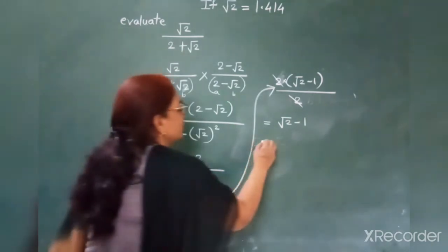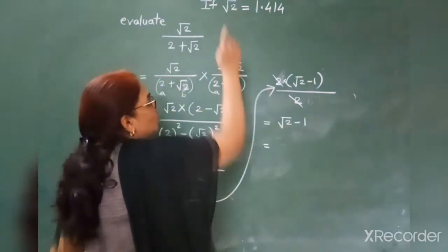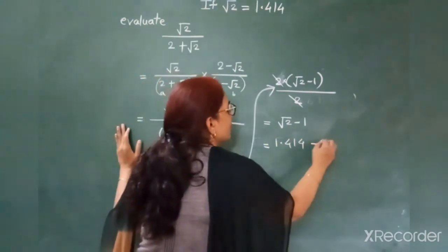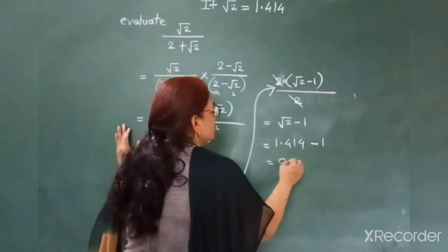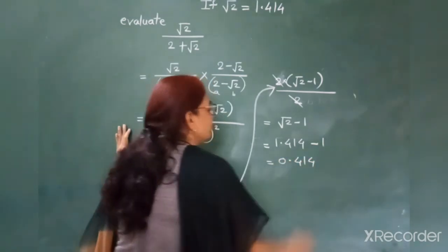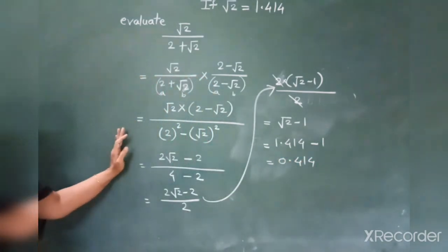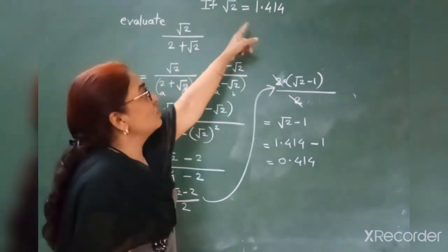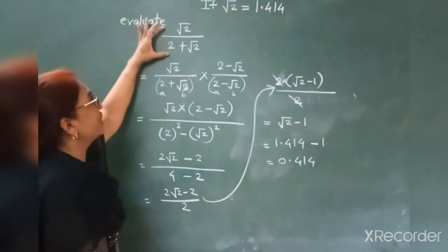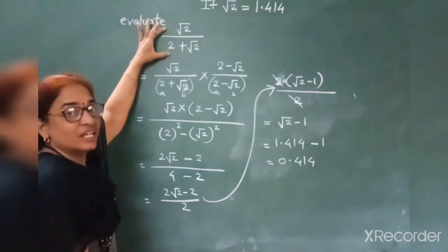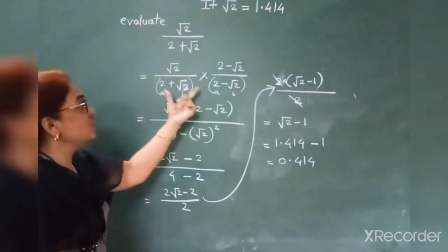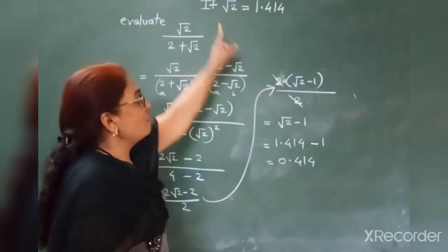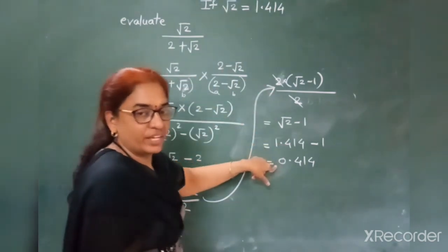Now put the value of root 2. The value of root 2 is 1.414, minus 1, and it will become 0.414. So when a question gives root 2 equal to something and you have to find the value of the irrational number, first rationalize its denominator, simplify it, and then put the value of root 2.